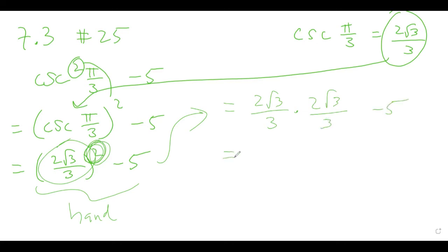Now in the top, we have 2 times 2, so that's 4. And then square root 3 times square root 3 is like square root 9, but square root 9 is just a regular 3.